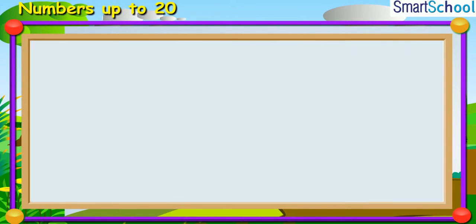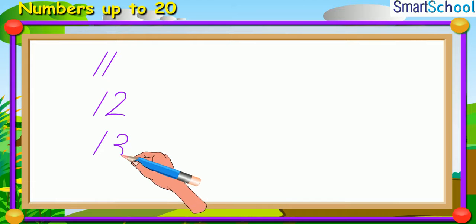Now Chunnu is writing numbers from 11 to 20 on the sketch sheet. Let us see how he does that. 1, 1, 11. 1, 2, 12. 1, 3, 13. 1, 4, 14.